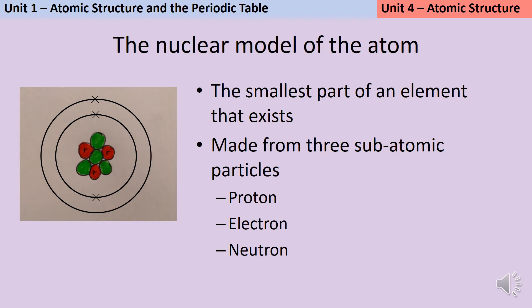An atom is the smallest part of an element that can exist. So if you take a block of carbon and you break it down into smaller and smaller pieces, the smallest piece that you can have that is still carbon is called an atom. That atom is made from three subatomic particles. Sub means under or smaller than, so a subatomic particle is just something smaller than an atom and the three subatomic particles are called a proton, an electron and a neutron.